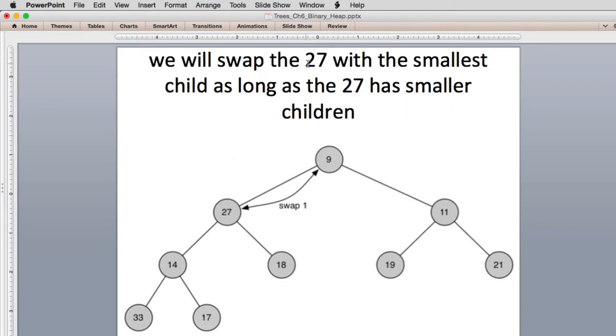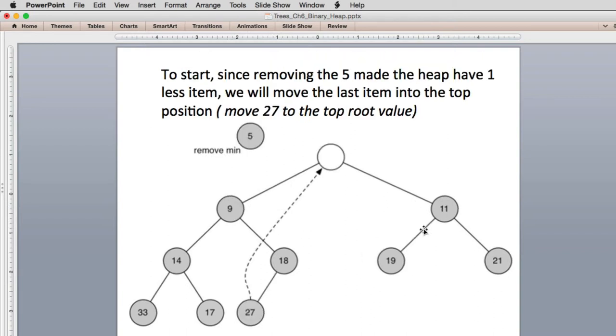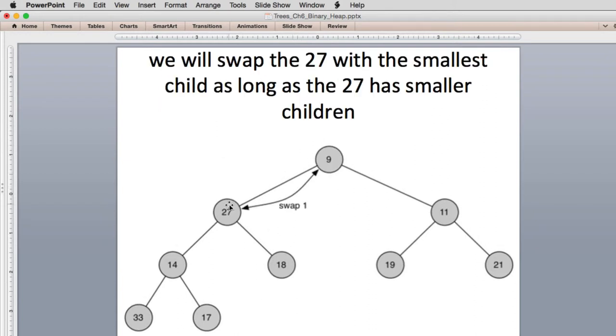So what we're going to do is we're going to swap the 27 with the smallest child as long as the 27 has smaller children. So we have an item here. We're going to swap with the smallest child, which turned out it was a 9. We had a 9 or 11 in the original list you see here. So it's swapped with the smallest child. And we just continued doing that.